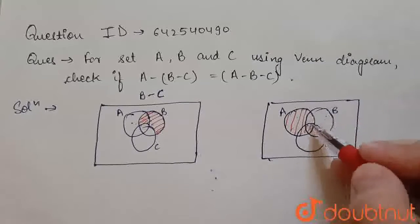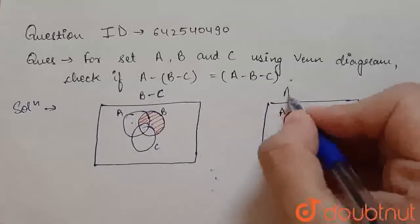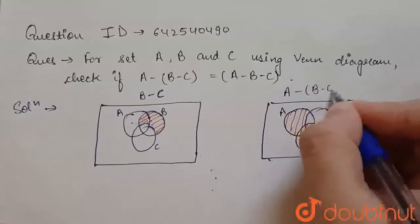This part is left. Only this part is subtracted. So, this is A minus B minus C.